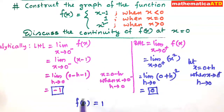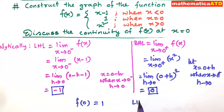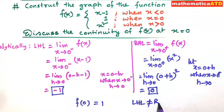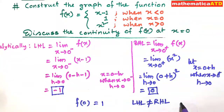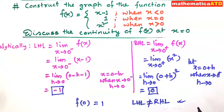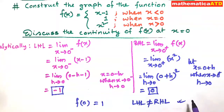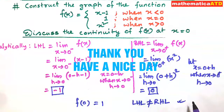This value f(0) = 1 does not matter. Since LHL is not equal to RHL, the limit does not exist, and for this reason the function f(x) is discontinuous at the given point x = 0. Thank you. Have a nice day.